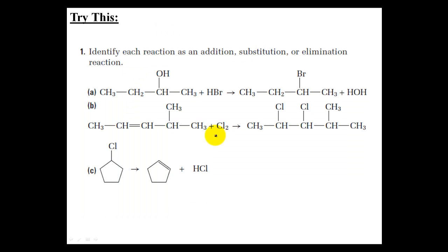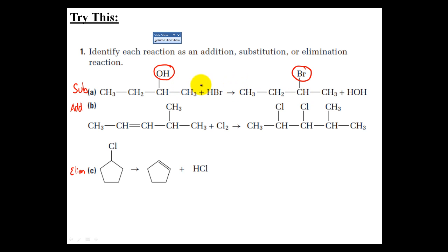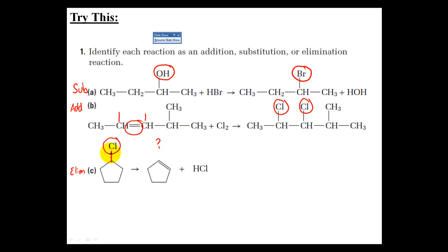Let's take a moment to see how well you're doing so far — please pause the video and answer this question. The first one is a substitution reaction because you're substituting the hydroxyl group for bromine — nothing was added or subtracted, you simply replaced the two functional groups. The second one is an addition reaction — you had a double bond, broke it to free two extra bond spaces, and filled them with chlorine. The last one is an elimination reaction — the chlorine is gone, so with that extra bond gone it collapses into a double bond and a hydrogen halide is produced.